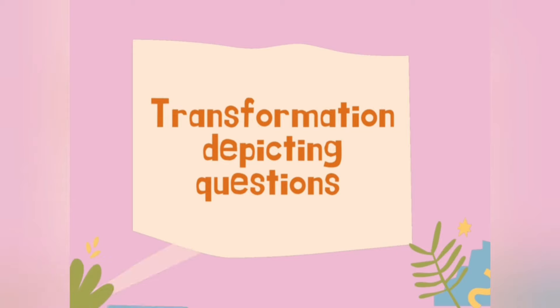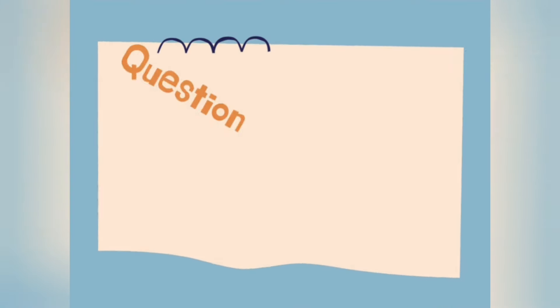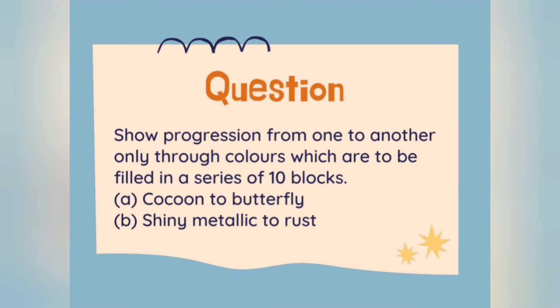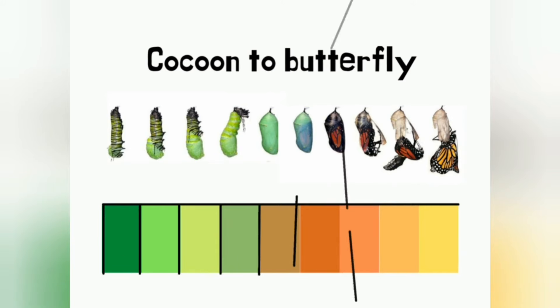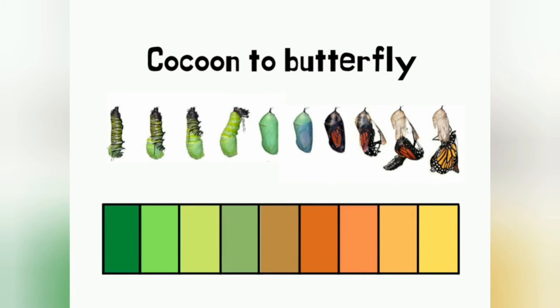Now, transformation-depicting questions — these transformations can be metamorphosis as well. Questions are asked in the same way as season or nature-depicting questions. The only difference is the situation; for example, cocoon to butterfly, or shiny metallic to rust. The best way to attempt such questions is to analyze the situation first, picturize the actual scene, and then extract colors from those real situations to fill your grids.